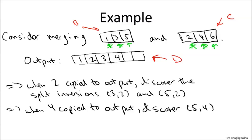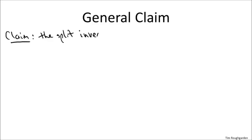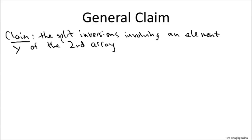We discovered all the inversions — (3,2), (5,2), and (5,4) — in an automated way by just keeping an eye out when we copy from the right array C. This is a general principle. The general claim is: no matter what the input array is, no matter how many split inversions there might be, the split inversions that involve an element of the second half of the array are precisely those elements remaining in the first array when that element gets copied over to the output array. This is exactly the pattern we saw in the example.